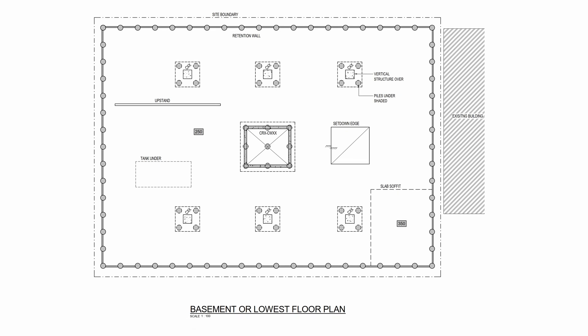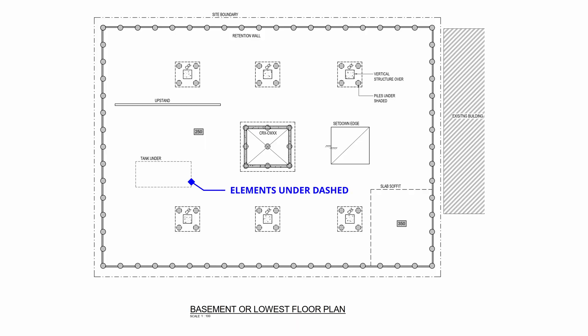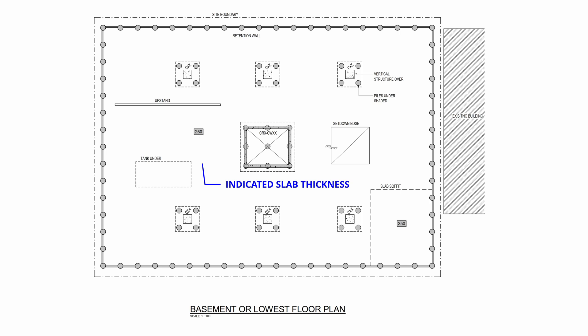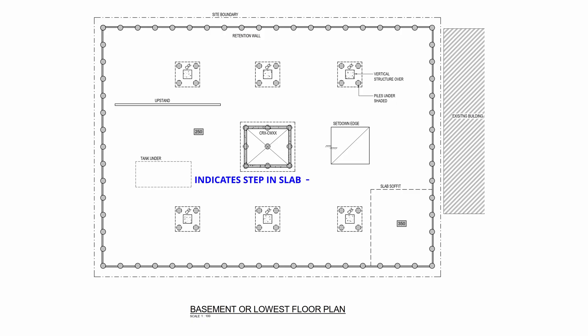Moving up, once pile caps are built, the next plan above is the slab on ground, or SOG. On the SOG plan you'd show the dashed tanks underneath, as you potentially need to span over them. Any soffit steps are shown as a dashed line where the bottom of the slab has stepped down, making a deeper section. The depth of the slab is called up — for example a 250mm slab in one location, and a 300mm thicker slab where there's a soffit step.